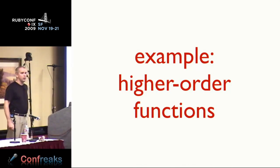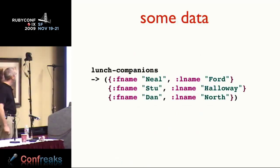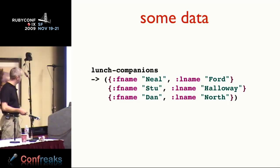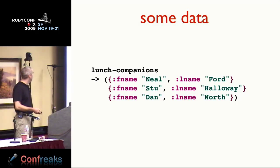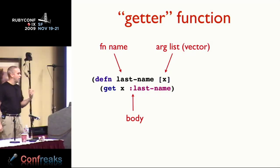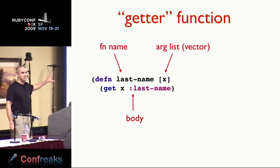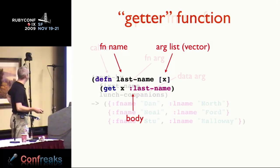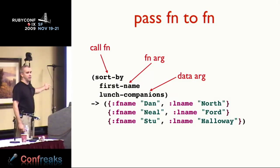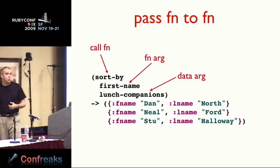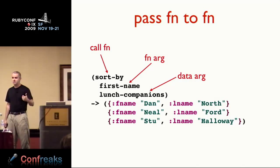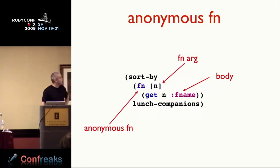A quick example: I have a piece of data — a group of lunch companions, a list of maps with people's names. You might write a getter function: 'define last-name of some object where I say get x last-name.' That's horrible, non-idiomatic Clojure — just pretend you didn't see that. But now that I've defined that last-name function, I could say 'sort-by last-name the lunch companions.' This notion of passing functions around as first-class citizens — in the Ruby world we're used to that. We have blocks — functions are first-class citizens, as long as you don't need two of them.